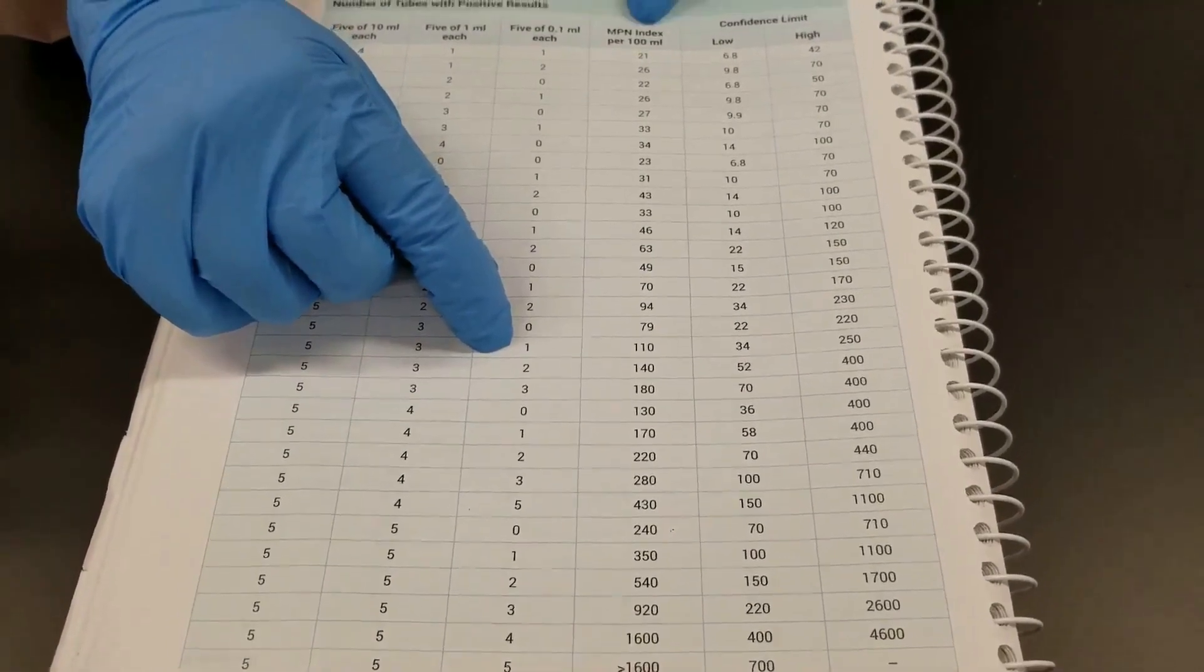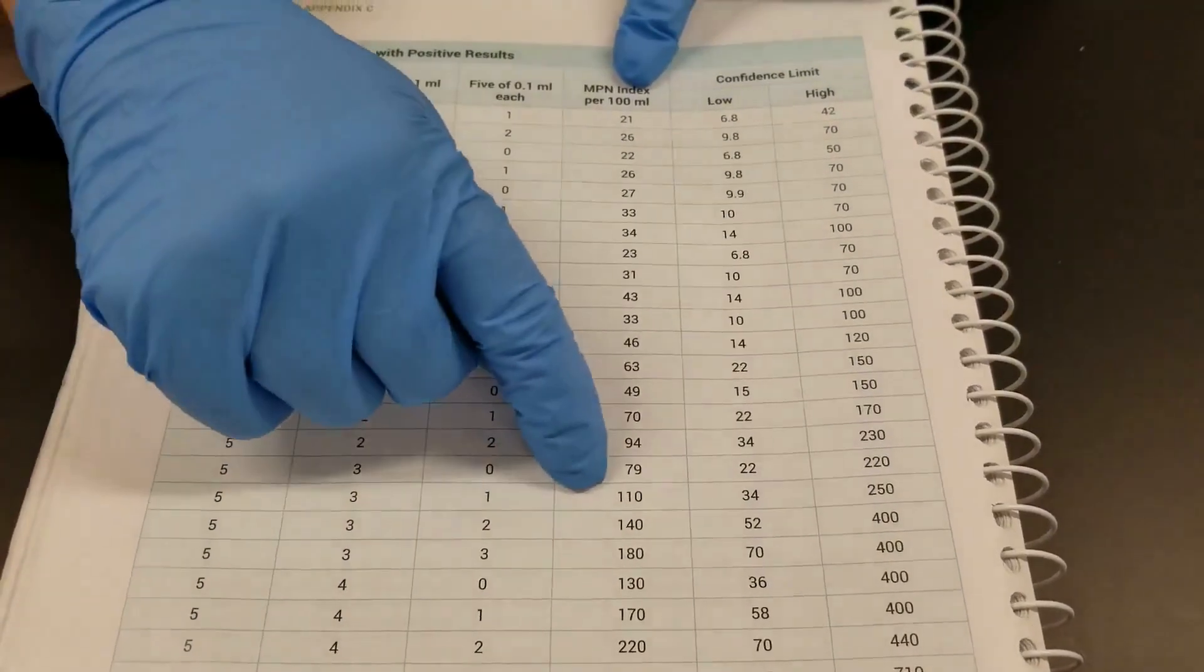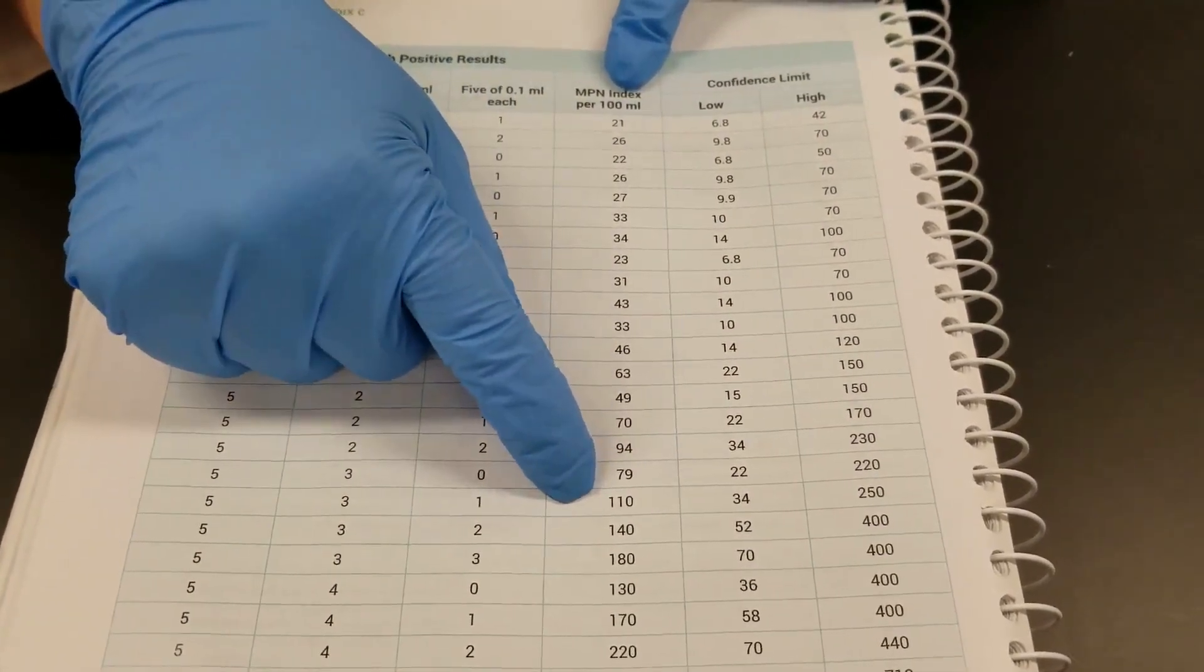And then this next column is the most probable number index per hundred mils. So, what does this number right here tell you? One hundred ten.